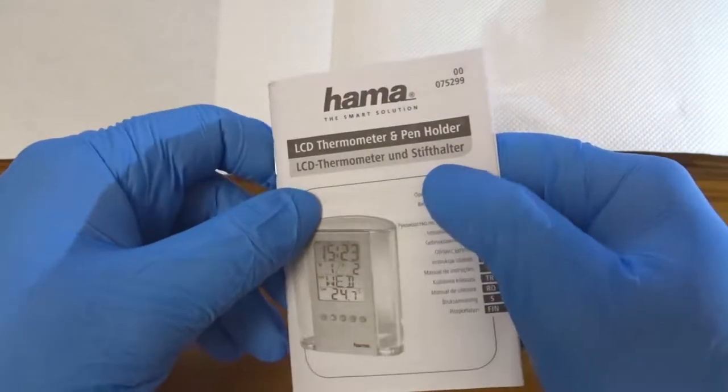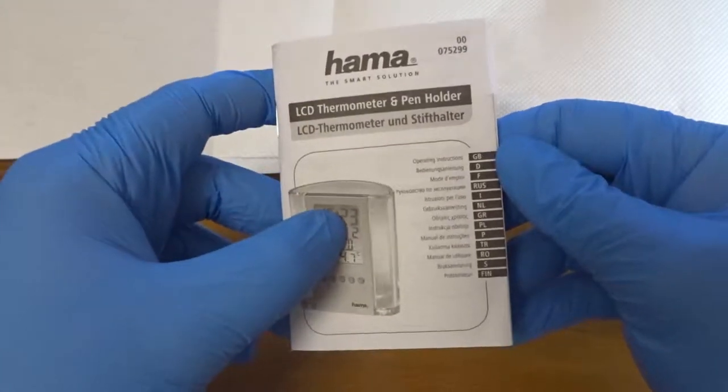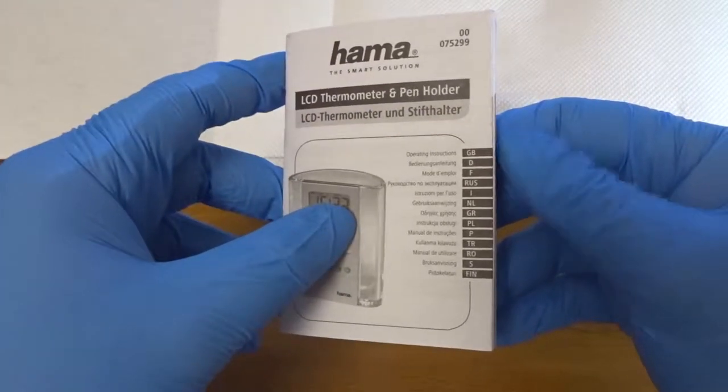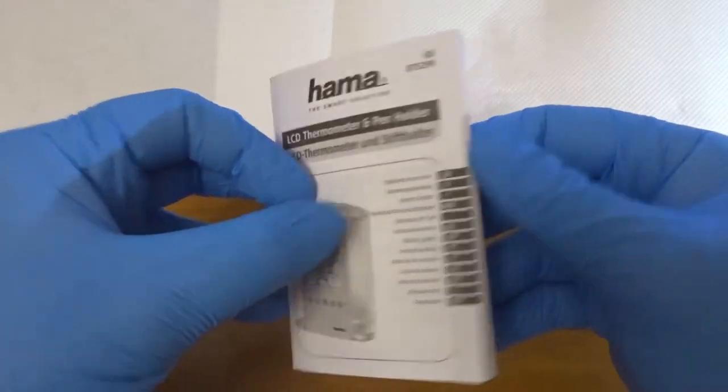Okay, there's nothing else in the box. I have a very, very thick instruction booklet as you can see. It is thermometer and stiff halter. I assume that's German and I don't know what that means but I assume it means pen holder.